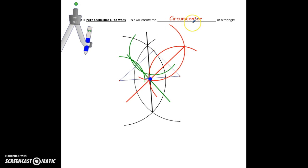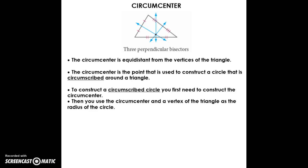This blue point is called the circumcenter of this triangle, and the circumcenter has some special properties. Because it's on the perpendicular bisectors, it is equal distance from the vertices of the triangle. If you were to connect from the circumcenter to each of the corners, that distance would be the same. It's also the point used to construct a circle that is circumscribed around the triangle.